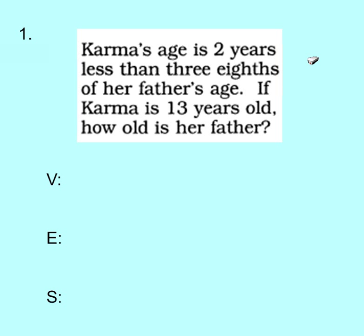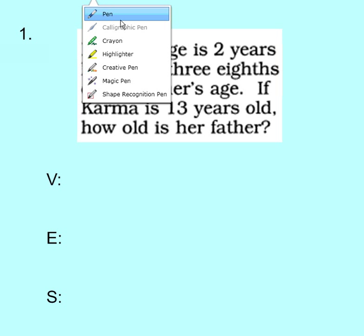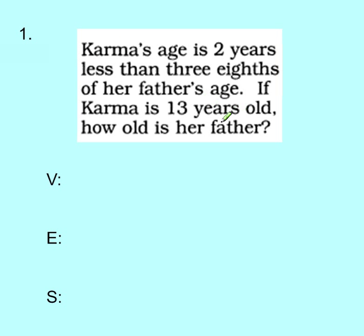Problem number one. Like all word problems, we start by highlighting the question: what are we going to answer first? We want to figure out how old is her father. So now we're going to assign that to the variable F. F is for father's age.